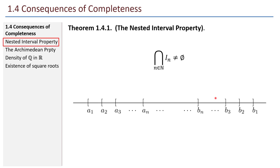First up, the nested interval property. Here's the idea: suppose I have infinitely many nested intervals. Here's our first one. It starts with a₁ at the left and b₁ at the right — a closed interval, meaning it contains its two endpoints. Then inside of that is our next interval, a₂ on the left and b₂ on the right. That second interval is nested inside the first.